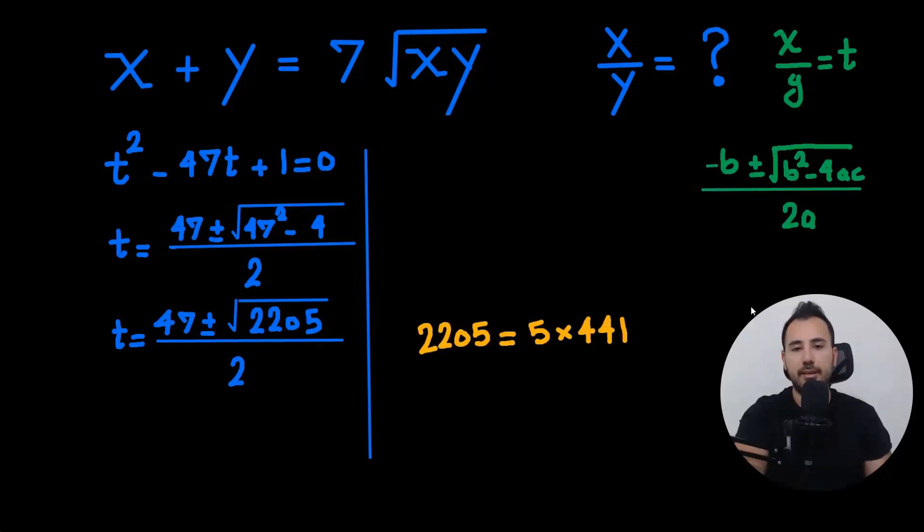2,205 is equal to 5 times 441, and I think a lot of you know, 21 squared is 441. So instead of 2,205, we're going to write 21 square root of 5.